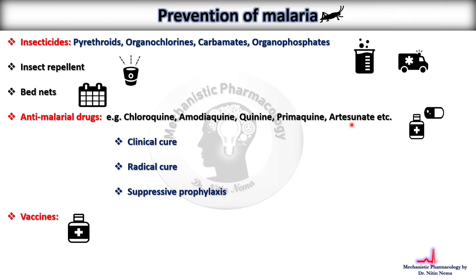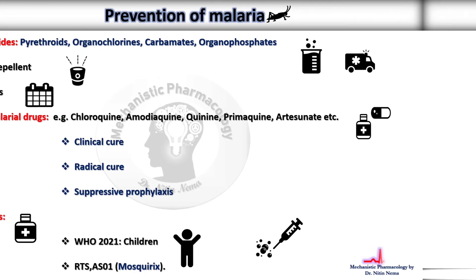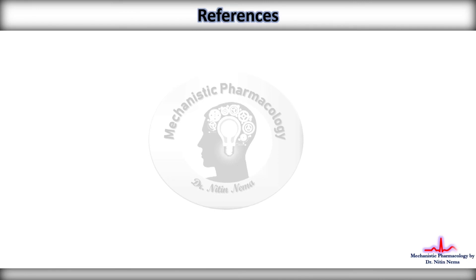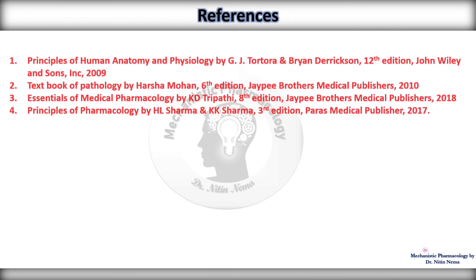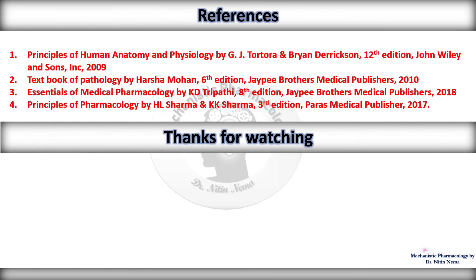As far as vaccines are concerned, the anti-malarial vaccine was discovered in the year 2021 for children, and the name of the vaccine is Mosquirix, that is RTS,S/AS01. Finally, these are a few references used for preparation. I hope you gained some basic understanding of malaria — its pathophysiology, life cycle, complications, prevention, and treatment.